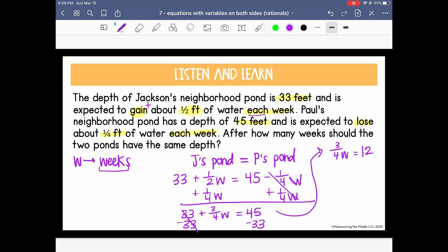And here's where I'll write that we have 3/4 W equals 45 minus 33, which is 12. 3/4 is being multiplied by W, so our last step is to divide by 3/4. Okay, so I know that W equals 12/1 times, and instead of dividing by 3/4, multiply by the reciprocal of 4/3. So let's cross-cancel since we can divide a 3 from both of these. 4 times 4 is 16, and 1 times 1 is 1, so that just gives us the whole number 16. And we were looking for the number of weeks, so we would say that after 16 weeks, Jackson and Paul's ponds will have the same amount of water.